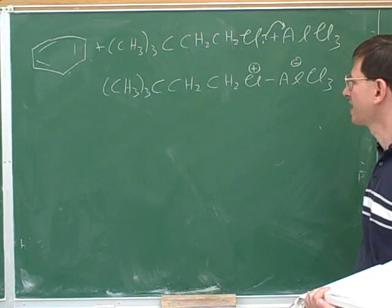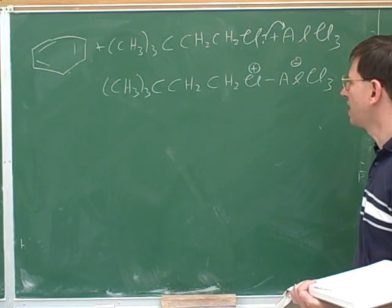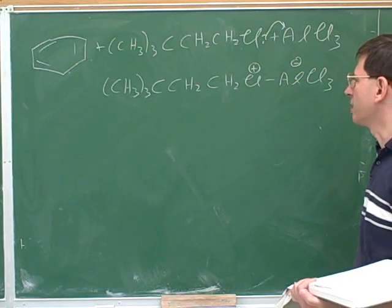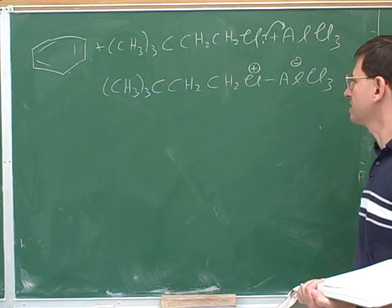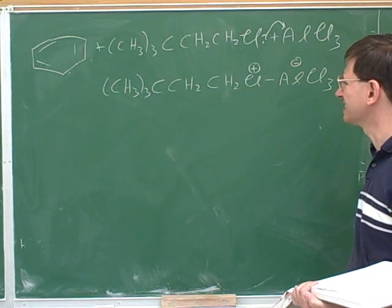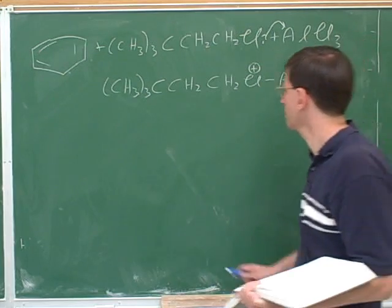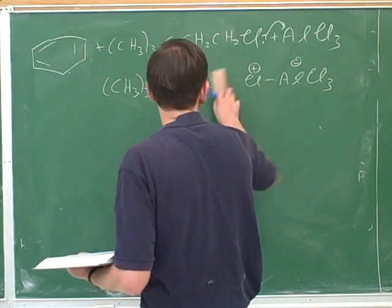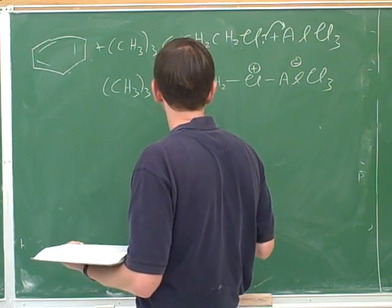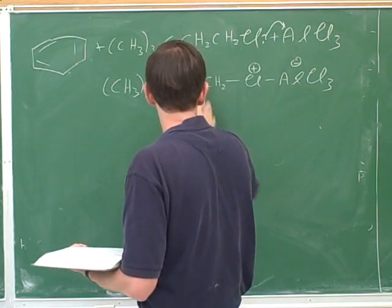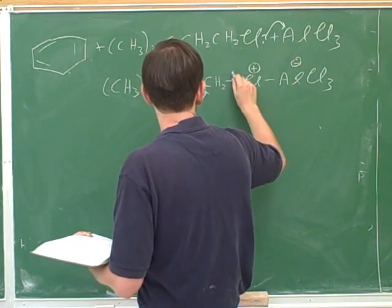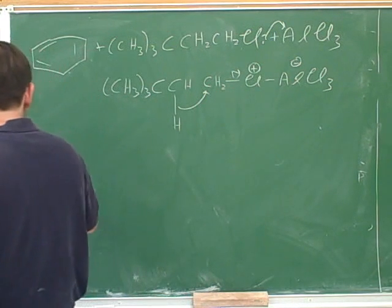So at first we're going to get something that looks like this. Now, there's definitely the potential for rearrangements here. And they want the major product. So which of these carbons is most likely to end up being our electrophilic carbon here? The second carbon, the secondary one. Because it probably can't go all the way to the tertiary, right? Even if it does go all the way to the tertiary, you can't attack it because then it'll have five bonds. So it has to be on the secondary one.